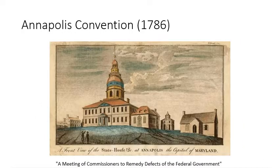The meeting in Annapolis was kind of a dud — only five states sent delegates, and others arrived too late or decided not to attend. So those who did meet said let's meet next year, in 1787, in Philadelphia. They sent a request to all the other state legislatures, and seven states immediately agreed and appointed delegations: Virginia, New Jersey, Pennsylvania, North Carolina, New Hampshire, Delaware, and Georgia. A few states were iffy but would later get on board. They decided to hold a convention at Philadelphia in the summer of 1787.